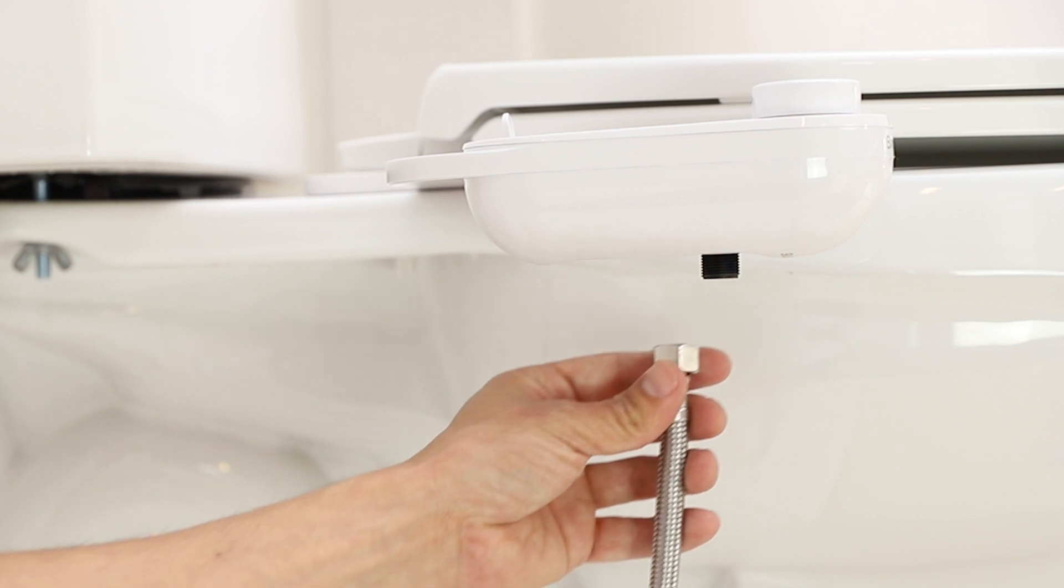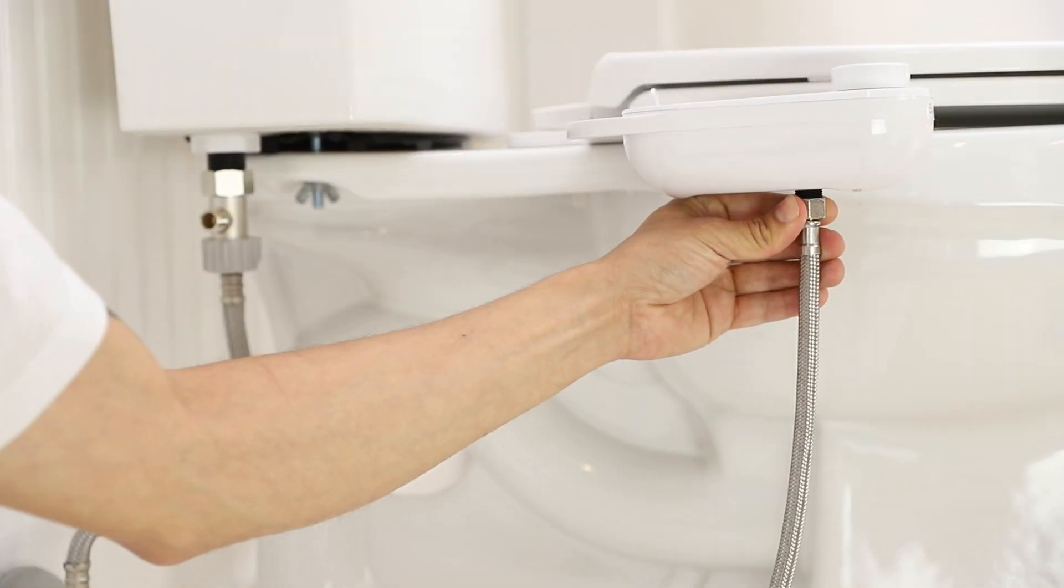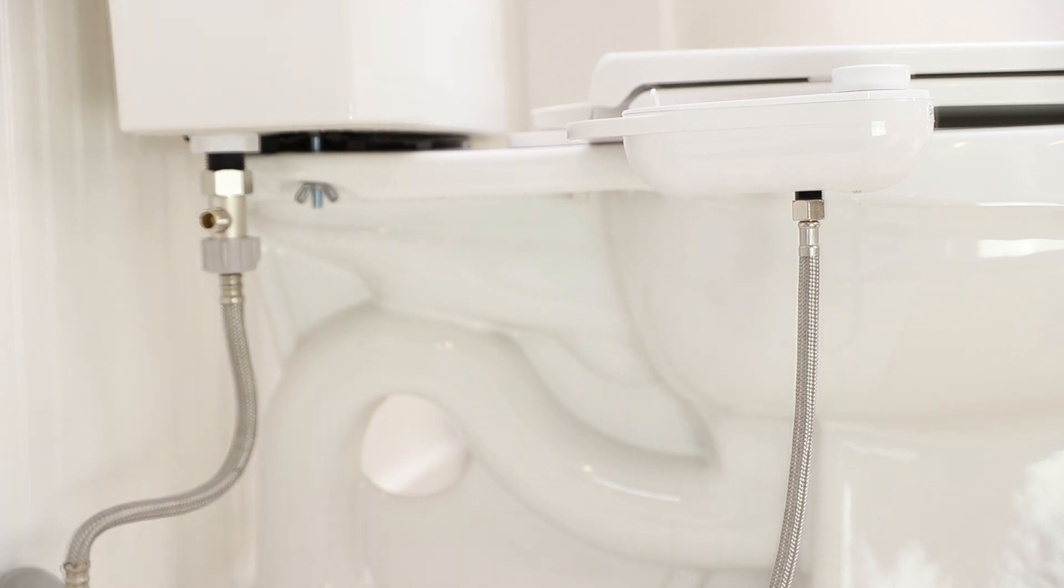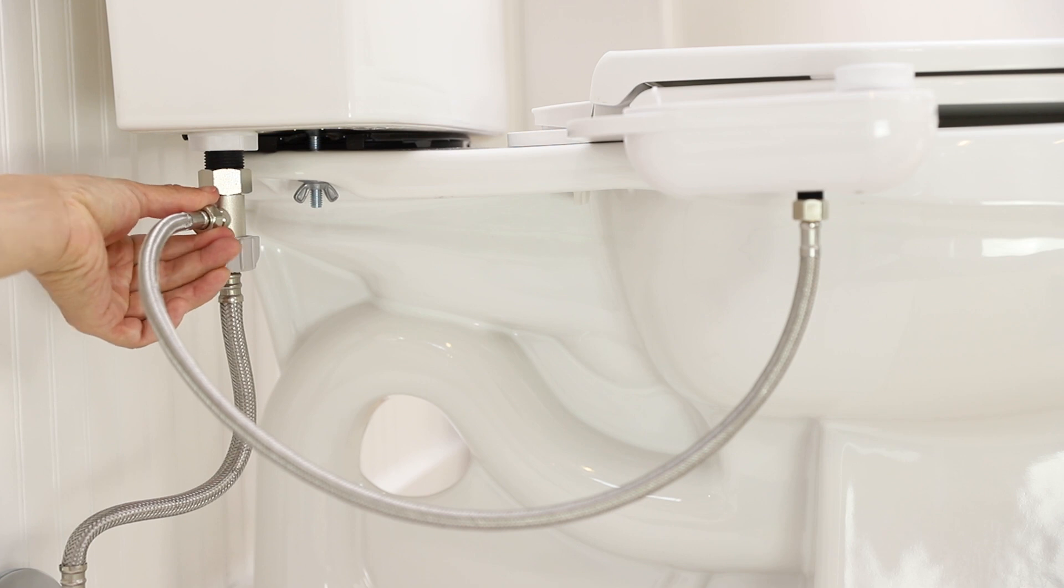Attach the braided metal bidet hose to the water inlet under the bidet attachment. Connect the open end of the bidet hose to the open side of the T-valve.